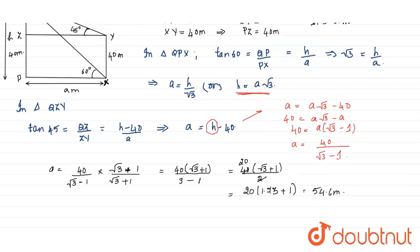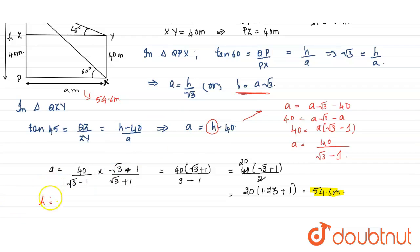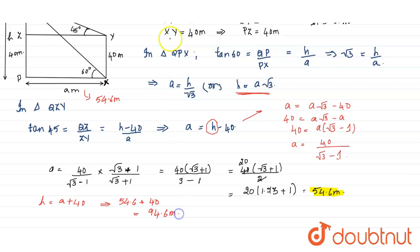We now have the value of a: 54.6 meters. We are asked to find the distance PX, so the distance PX equals 54.6 meters. Now we find h, the height of the tower. From a equals h minus 40, that means h equals a plus 40, which is 54.6 plus 40, giving 94.6 meters. So the height of the tower is 94.6 meters.